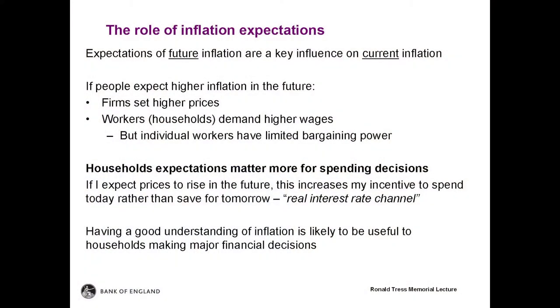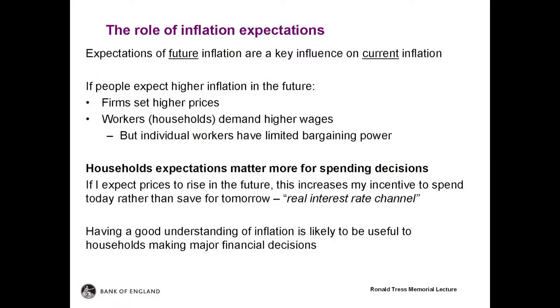People's expectations of future inflation are key influences on current inflation. A range of evidence supports the idea that the reduction in the level and volatility of inflation over the past 40 years has come about in large part due to central bank success in reducing inflation expectations. Inflation expectations affect people's decisions in several ways. If households and companies expect prices to rise more quickly, they are likely to negotiate higher wage increases, and companies are more likely to set higher prices for their goods and services.